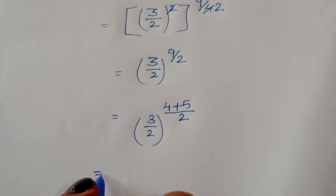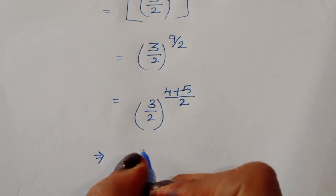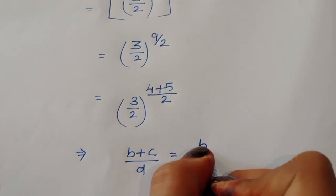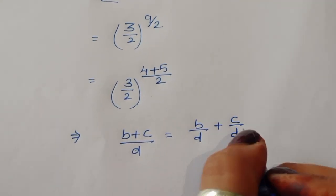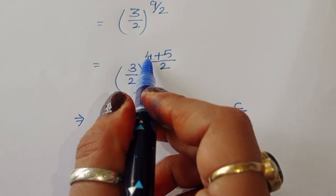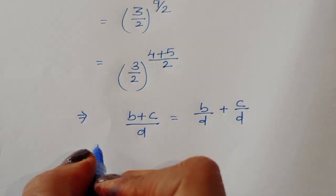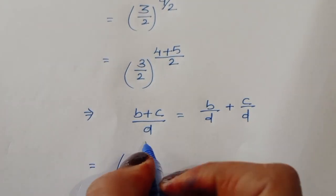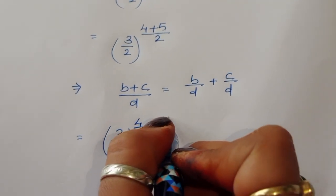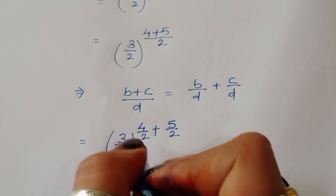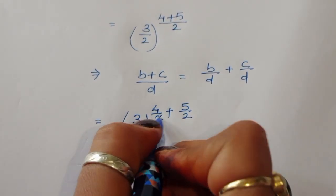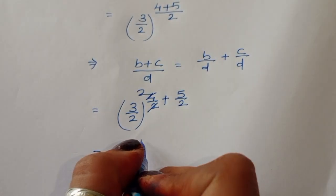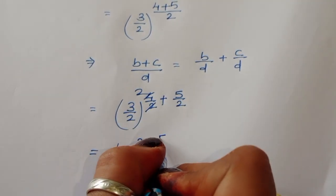Now we have to apply one formula: if (b + c) upon d is given, we can write this as b/d plus c/d. Using this formula, we can write this as power 4 upon 2 plus 5 upon 2. We are separating the power here. 2 twos are 4, so we can write (3/2) to the power 2 plus 5 upon 2.